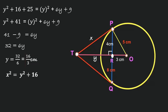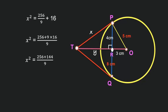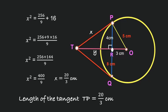Now put the value of y into x² = y² + 16. So x² = (16/3)² + 16 = 256/9 + 16. Taking LCM: x² = (256 + 9 × 16) / 9 = (256 + 144) / 9 = 400/9. Therefore x = 20/3. The length of the tangent TP is 20/3 cm.